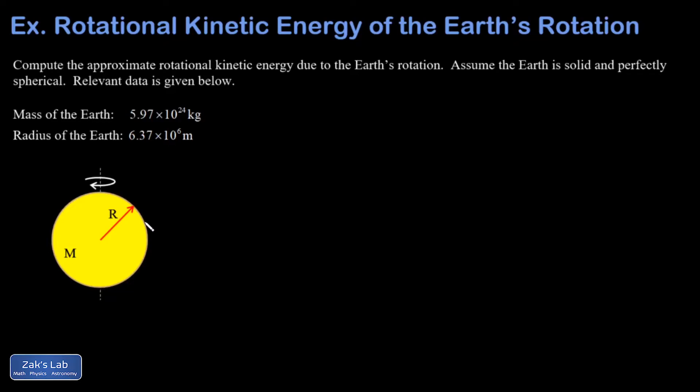There's the rotation about its own axis. There's the revolution about the Sun. In addition to that, there would be the motion of the entire solar system through the galaxy. So we're just looking at the spin of the Earth.